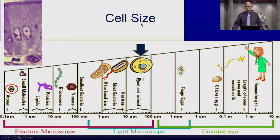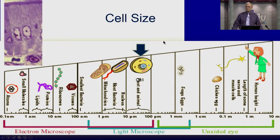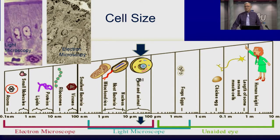How big is a cell? A cell could be from 10 to 100 micrometers. A cell is much smaller than a teacher but much larger than viruses or atoms — right in the middle. You cannot see a cell with your unaided eye, so scientists had to develop the microscope. The light microscope can see cells, and the electron microscope can see them with much more detail. You see much more detail with an electron microscope than you can with a light microscope.